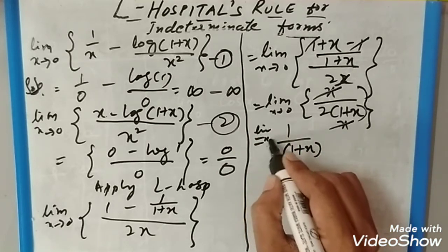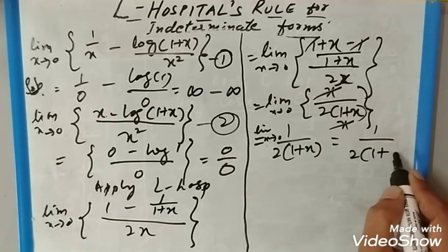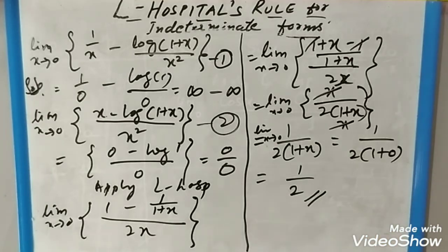This is limit x tends to 0. When you apply the limit it will become 1 divided by 2(1+0). Finally you will get the answer 1/2. So that is the indeterminate form which we solved. Please share and subscribe our channel.